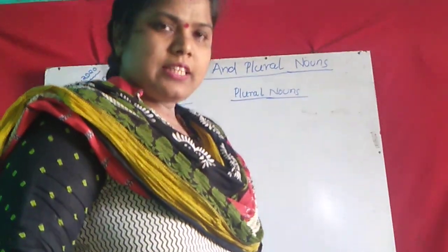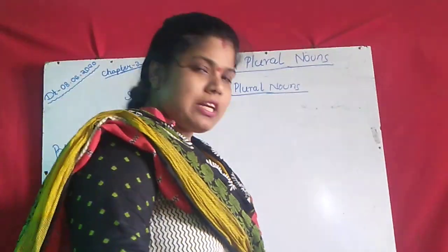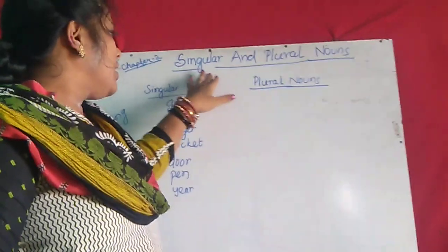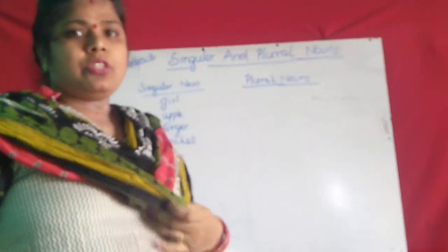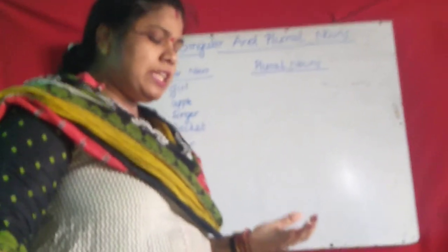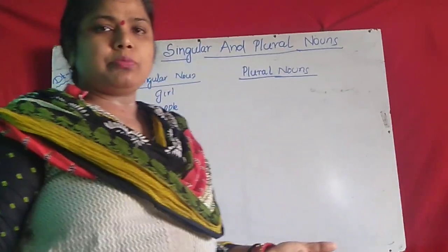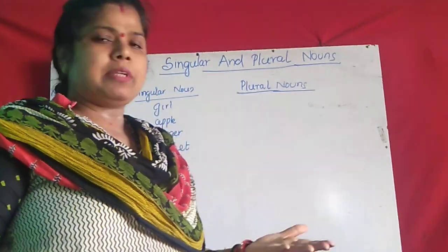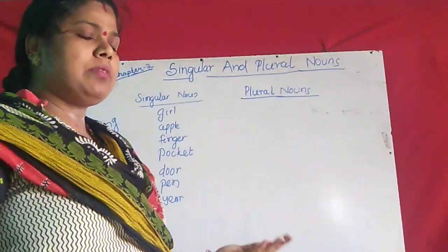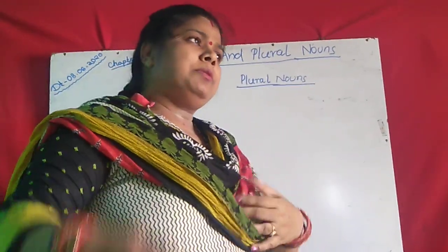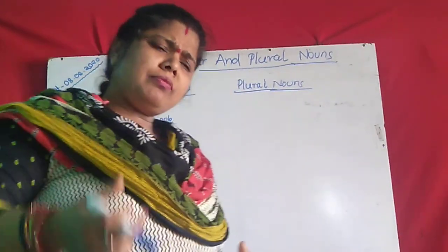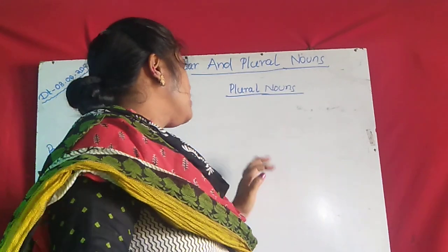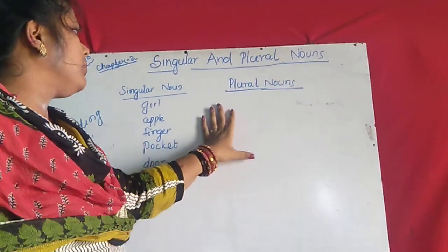Hello students, today again I welcome you to grammar class. Today's chapter is singular and plural nouns. In the previous chapter we read about nouns and types of nouns — how there are five types of nouns: countable, uncountable, abstract, common, and very many types. So this chapter we read about singular and plural.